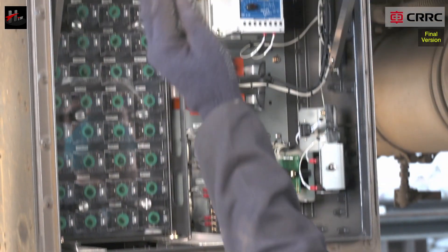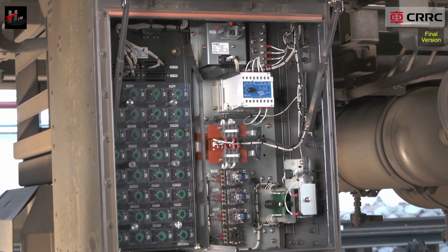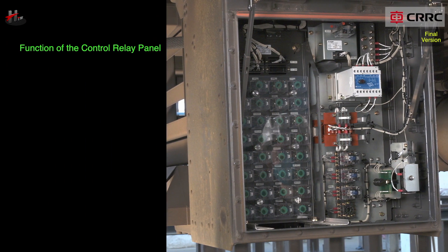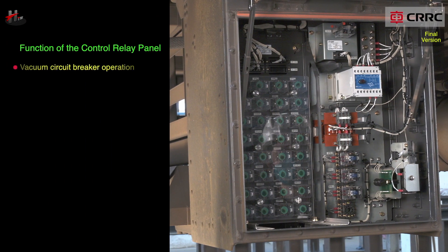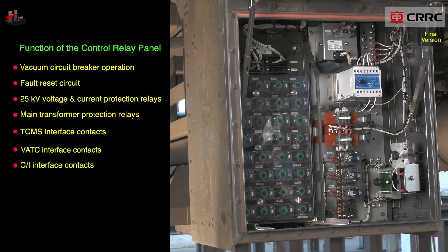The function of the control relay panel of the AC control box is to provide sequence control for a number of control functions on the train, which are: vacuum circuit breaker operation, fault reset circuit, 25 kV voltage and current protection relays, main transformer protection relays, TC-MS interface contacts, VATC interface contacts, CI interface contacts, and the automatic power control relays.